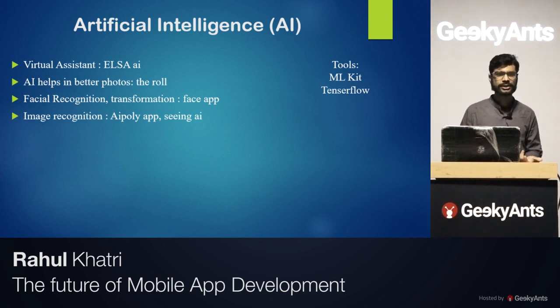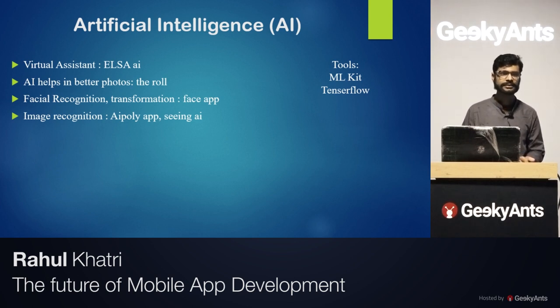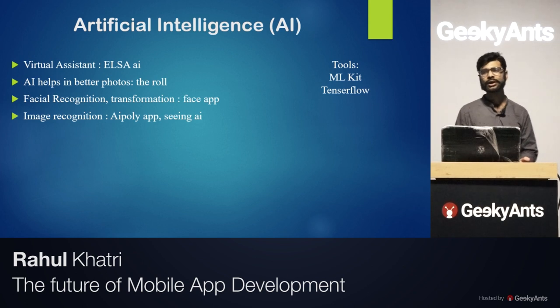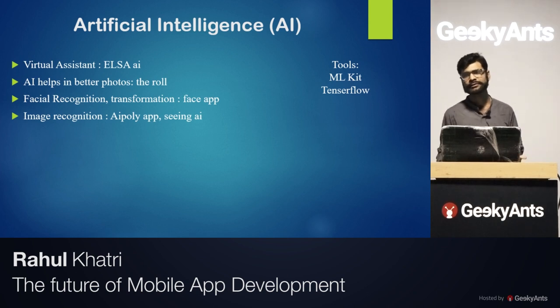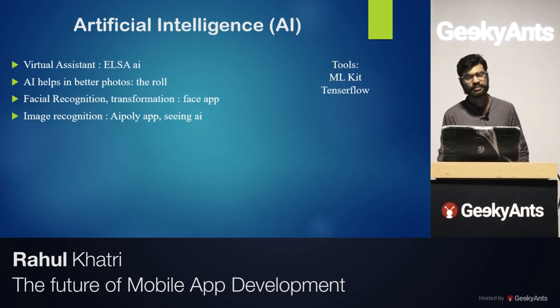Other AI features include facial recognition — in our smartphones, AI scans our faces to unlock the device. There is also image recognition, which is especially important for people with visual impairments.